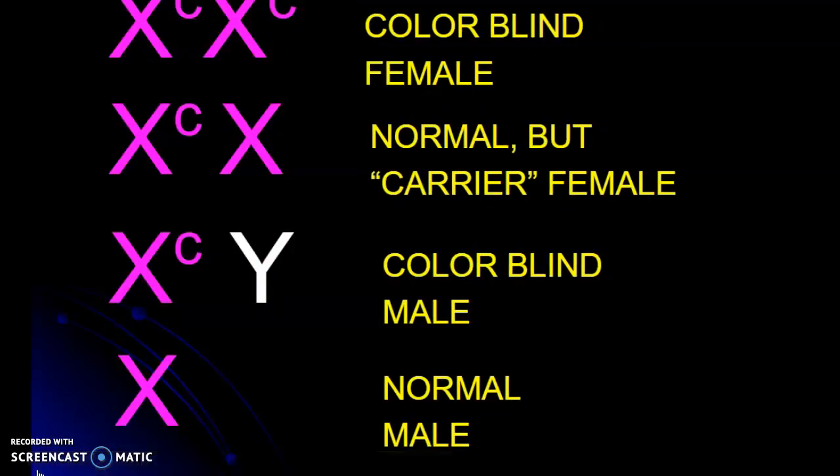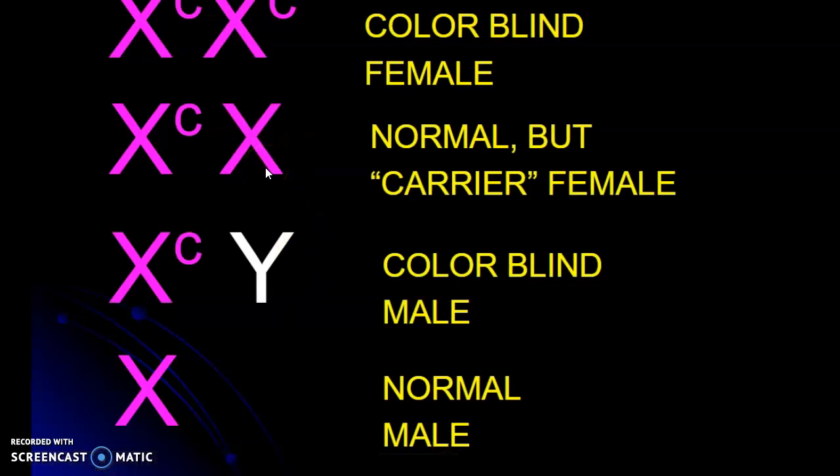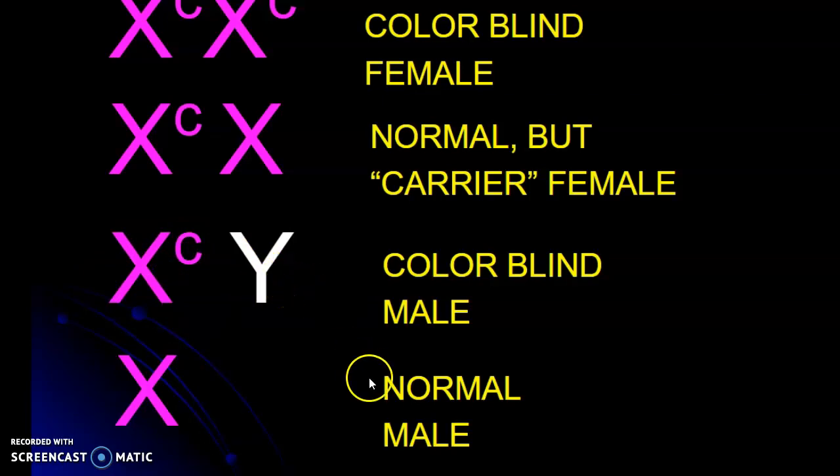So we have different possibilities for males and females. If a female has two X chromosomes with a colorblindness gene on them, she would be colorblind. If she had only one colorblindness gene, one normal X, she'd just be a carrier. She carries the gene, but she doesn't have the colorblindness because this X chromosome is overriding it. Colorblind males would have just one X chromosome with a colorblindness gene on it and a normal Y. Normal male would just be XY.